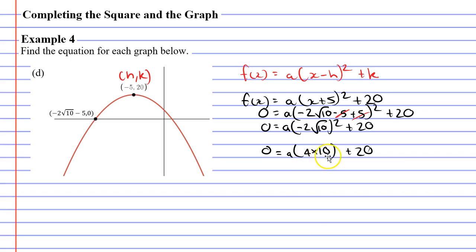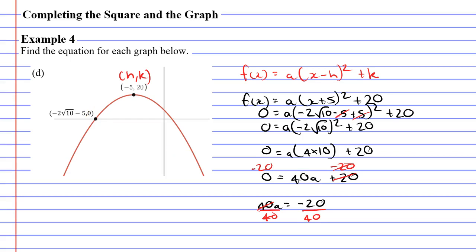So we have 0 equals 40A plus 20. I'm going to subtract 20 from both sides, giving 40A equals negative 20. Now we divide by 40: 20 over 40 is the same as one half, and we've got a negative, so A equals negative one half. So our function will be: f(x) equals negative one half times (x plus 5) squared plus 20.